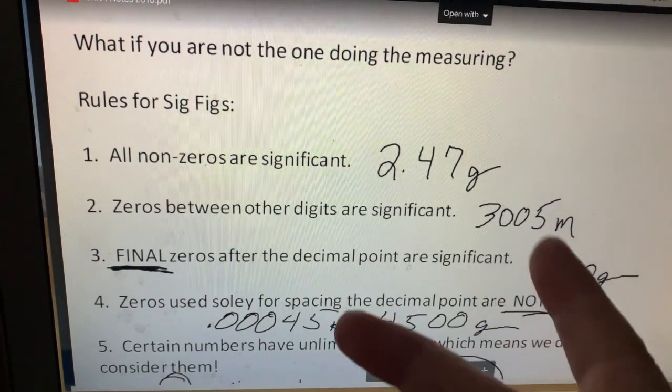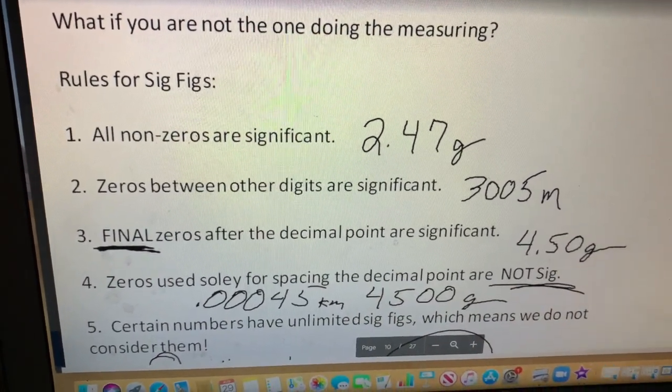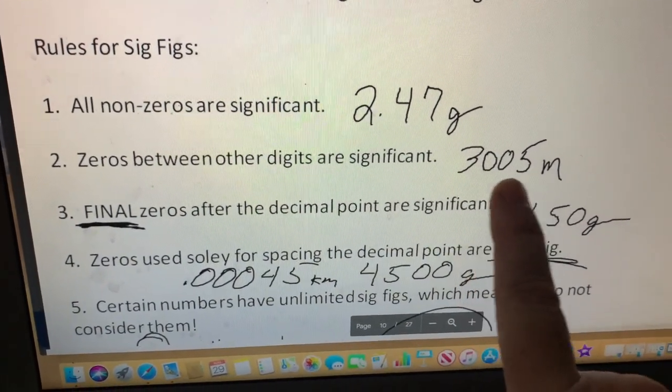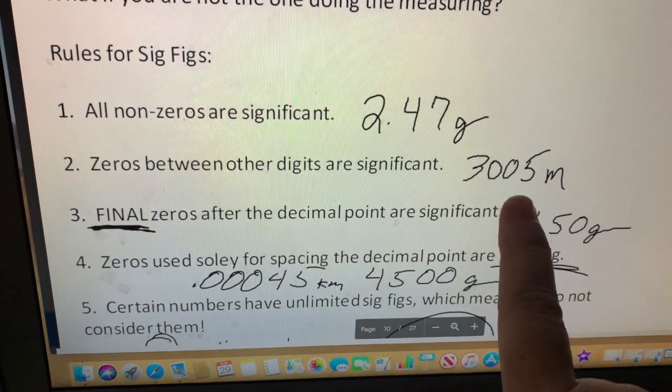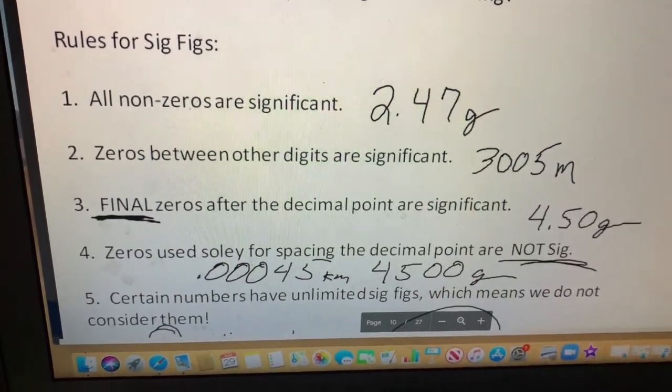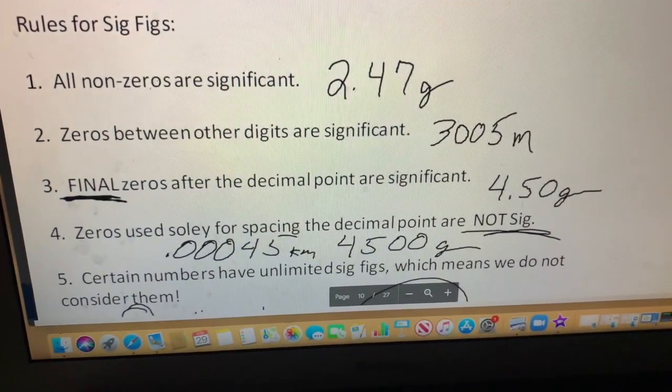Now rule number two. Zeros between other digits are significant. So what does that mean? Well zeros are kind of where we come into a little bit of problems with significant figures. So I call this the sandwich rule. If you have zeros that are sandwiched between other significant figures, the 3 and the 5, they count and they are actually part of your measurement.